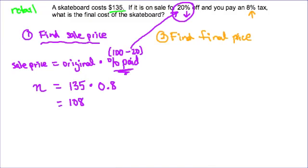The next thing I'm going to do is I'm going to find the tax. And instead of finding the tax amount, I'm actually just going to find the final price. So the final price equals the original amount times the percent paid.